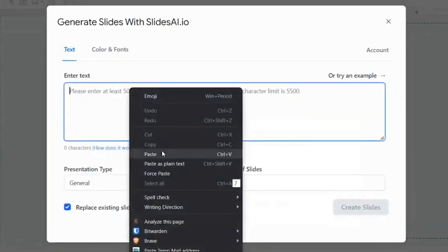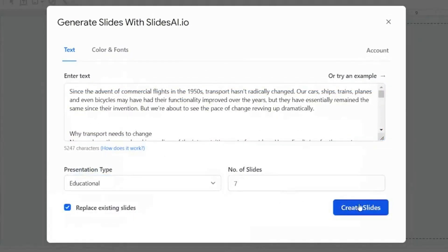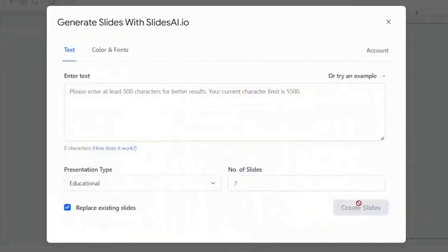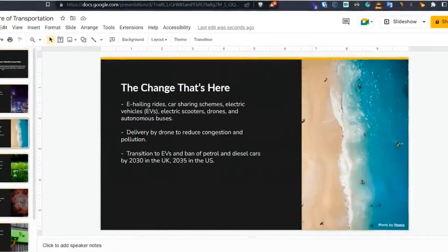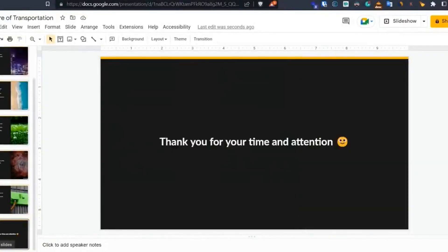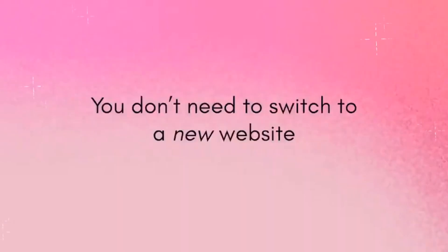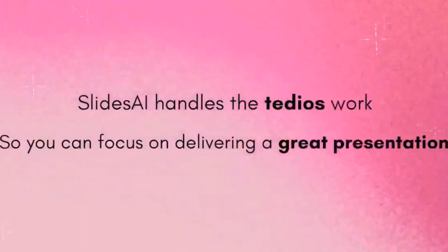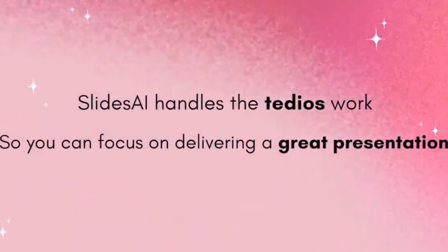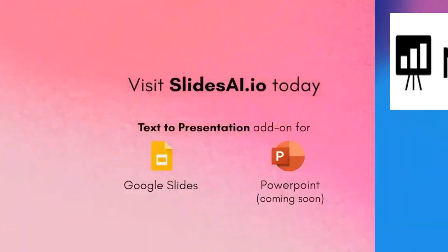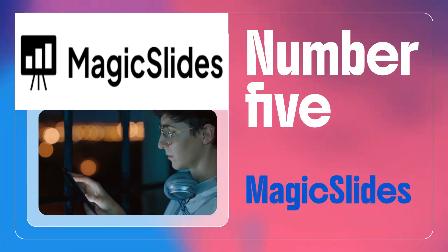It's fast, creative, and ready to impress. Number five: Magic Slides. This AI tool uses AI to quickly and easily create presentation slides from any piece of text.